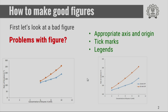The third problem is that the legends are missing. In this case, you can clearly see there are two curves, but the plot does not say whether these two curves are for two different sets of measurement or what the distinction between these two curves is.